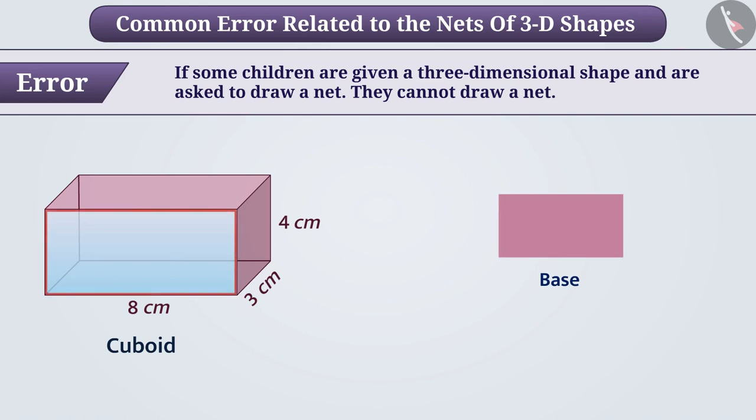After identifying the faces on all of its 4 sides, you can draw them on the 4 sides of the base in the net. Then the net can be completed by placing the face opposite to the base.